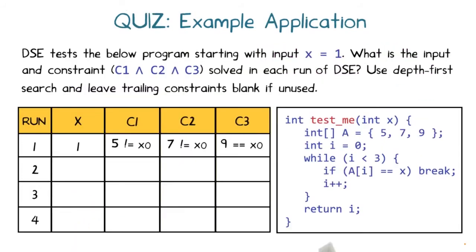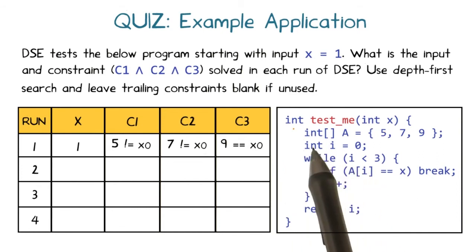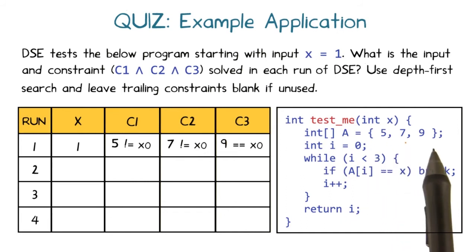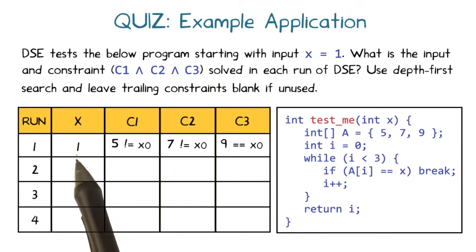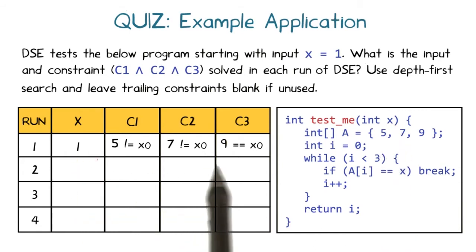Now consider the function testme which takes integer x and returns an integer. An array a is assigned {5, 7, 9}; integer i is assigned 0. While i is less than 3, if a[i] equals x then break; otherwise increment i. Return i. Suppose DSE tests this function starting with x equals 1. In iteration 1, the input x is 1, C1 is '5 does not equal x0', C2 is '7 does not equal x0', and C3 is '9 equals x0'.